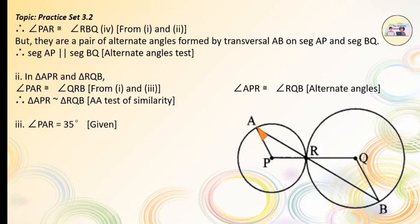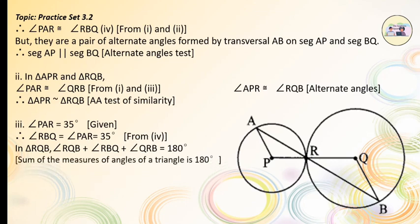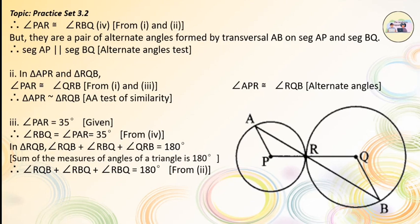Now, for the third sub-question: angle PAR = 35 degrees (given). Therefore, angle RBQ = angle PAR = 35 degrees, from equation No. 4. Therefore, in triangle RQB: angle RQB + angle RBQ + angle QRB = 180 degrees, by the angle sum property of a triangle. Since angle QRB = angle RBQ from equation No. 2, we get angle RQB + 2·angle RBQ = 180 degrees.